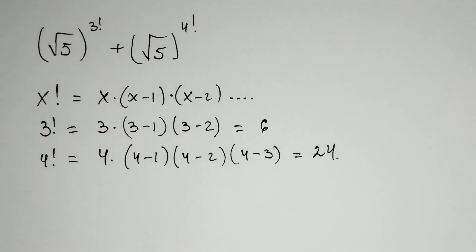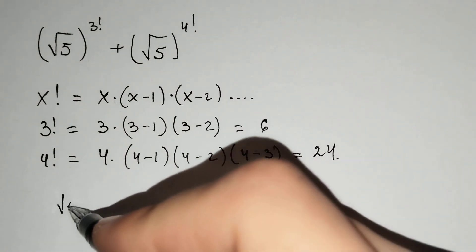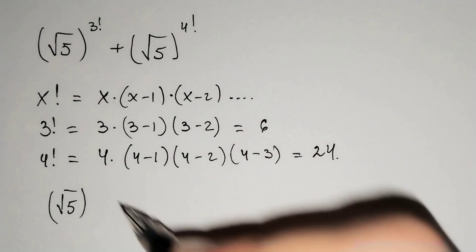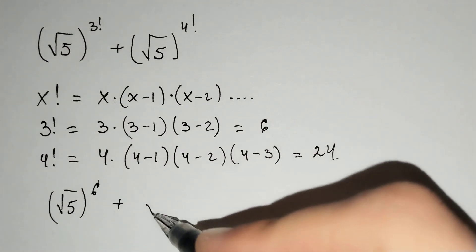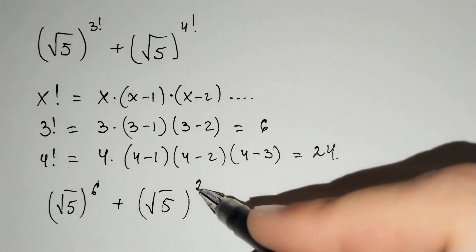Now, let's put this above: the square root of 5 power 6 plus the square root of 5 power 24.